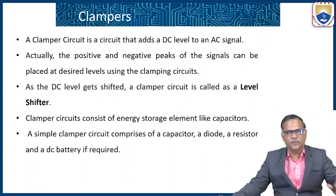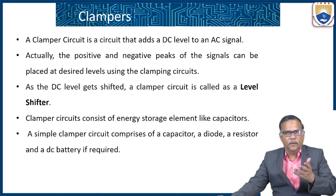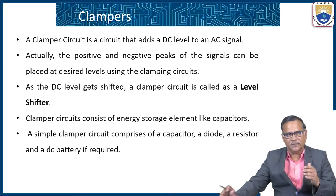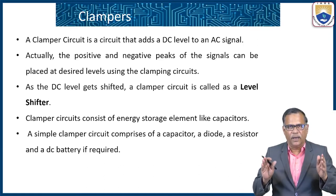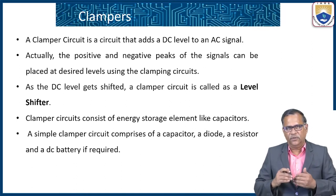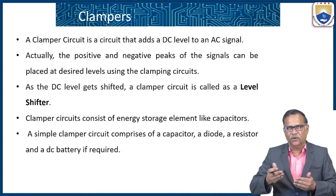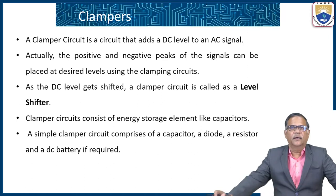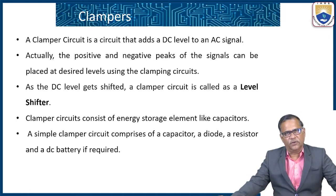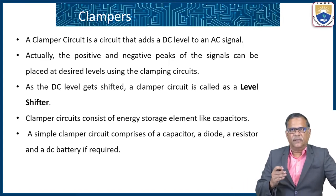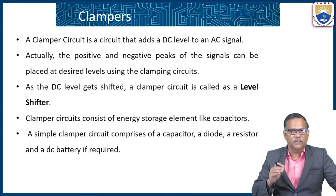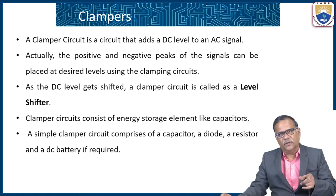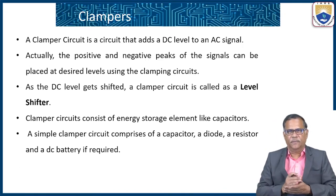A clamper is a circuit which adds a DC level to the AC signal. The average value of an AC signal is zero because when the AC signal is positive, the DC is blocked. Using a clamping circuit you can change the DC or average value of the AC signal. The positive and negative peaks of the signal can be placed at a required or desired level. As the DC level gets shifted, the clamping circuit is also called a level shifter. In clamping circuits, only the DC or average value is changed but not the wave shape.